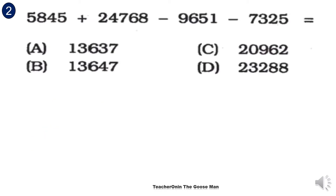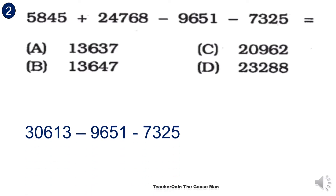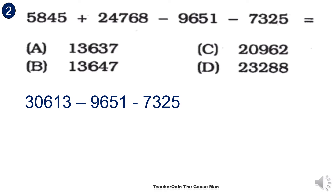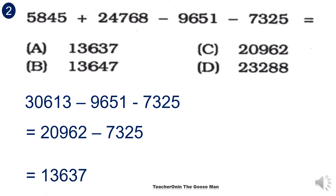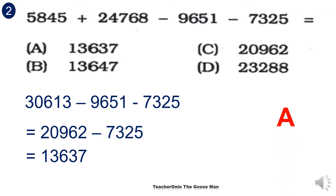We have 5,845 plus 24,768 minus 9,651 minus 7,325. We will perform the operation from left to right, so I'll add first 5,845 plus 24,768 to get 30,613. Then 30,613 minus 9,651 gives 20,962 minus 7,325, so the final answer is 13,637. The correct answer is letter A.